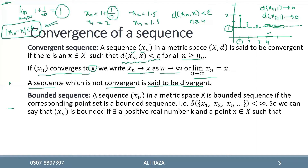The next step is bounded sequence. A sequence xn in a metric space x is bounded — it is called a bounded sequence if the corresponding point set is bounded.